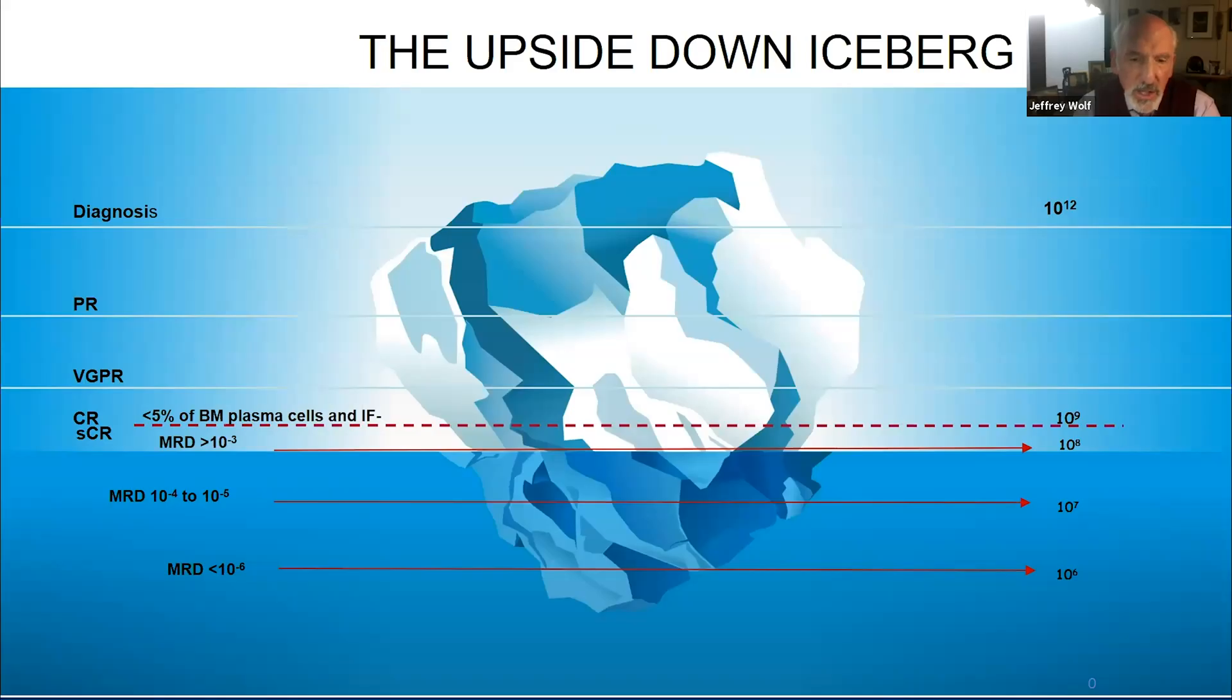Minimal residual disease or more recently measurable residual disease is the way by which we measure what's under the water. That is the last 3% or 2% of the disease that we can't otherwise measure. As you can see here, when you get to the water's edge, there may still be a billion cancer cells left. And this is why patients, even though they achieve what we call complete remission, it's a misnomer because it's not complete. People still relapse. And I believe that we shouldn't be calling it a complete remission. It's confusing for patients and I think we should change our terminology.